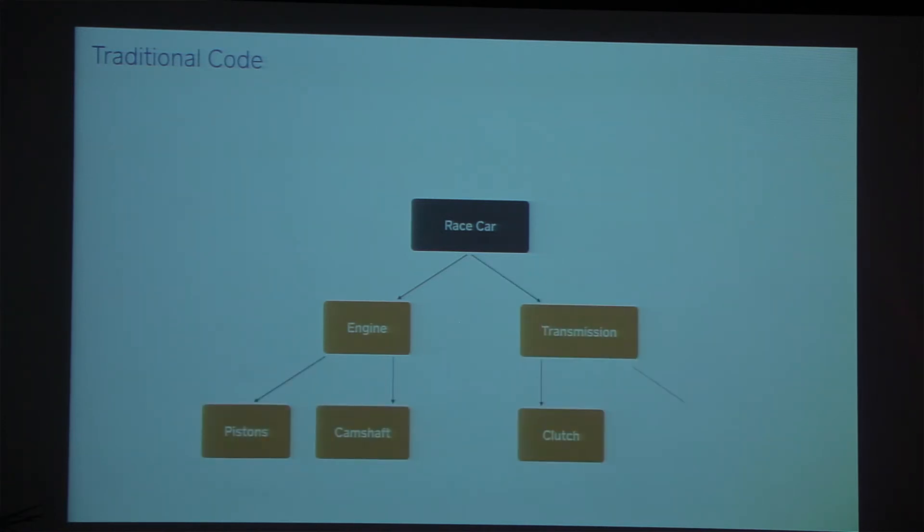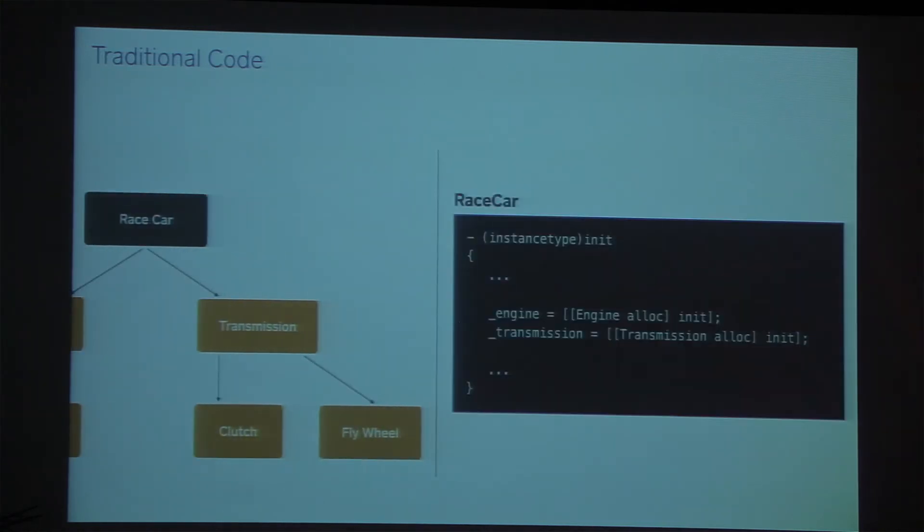So, let's illustrate this using some traditional code. Let's say you want to create a race car. You're going to call alloc init, it'll create your race car, and then as part of doing that, that's going to create an engine, and then eventually at the end of this, you've created a whole bunch of these objects just by creating that race car initially. And then your code will look something like this. You call init on the race car, the race car will call init on the engine and the transmission, et cetera.